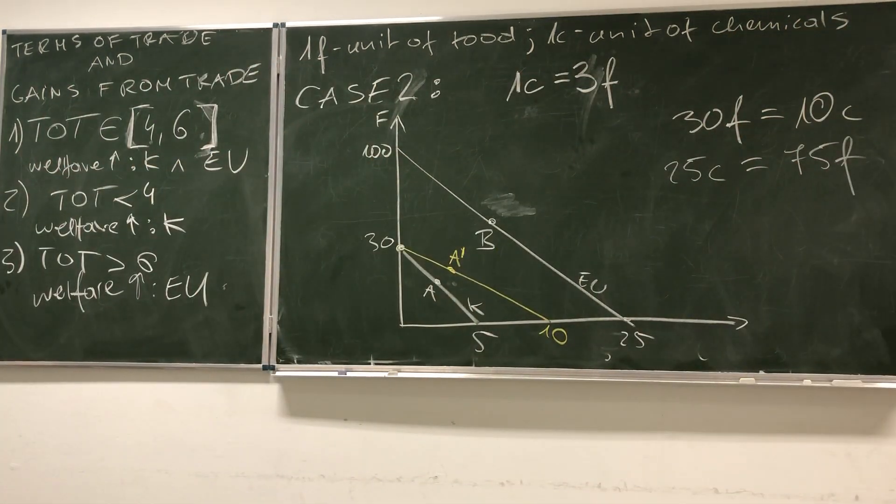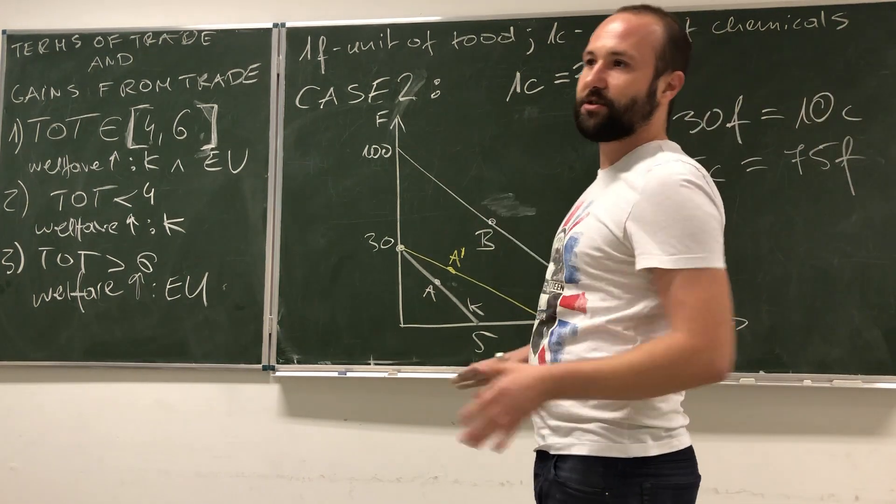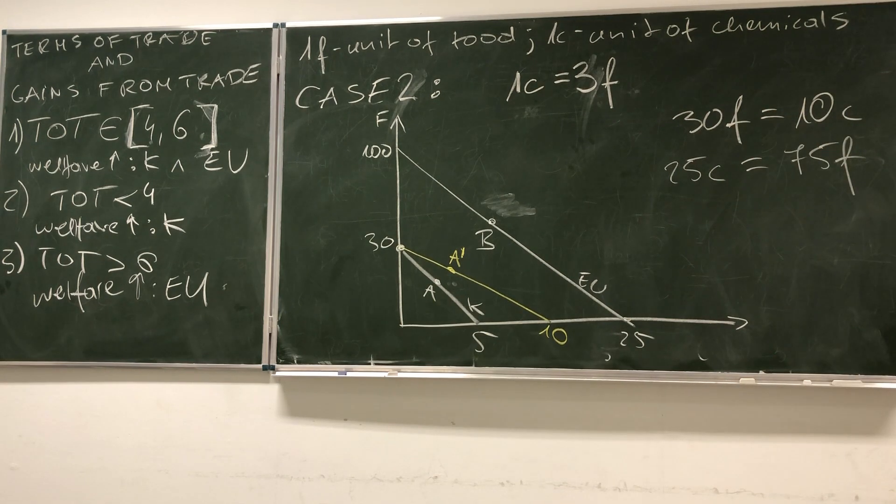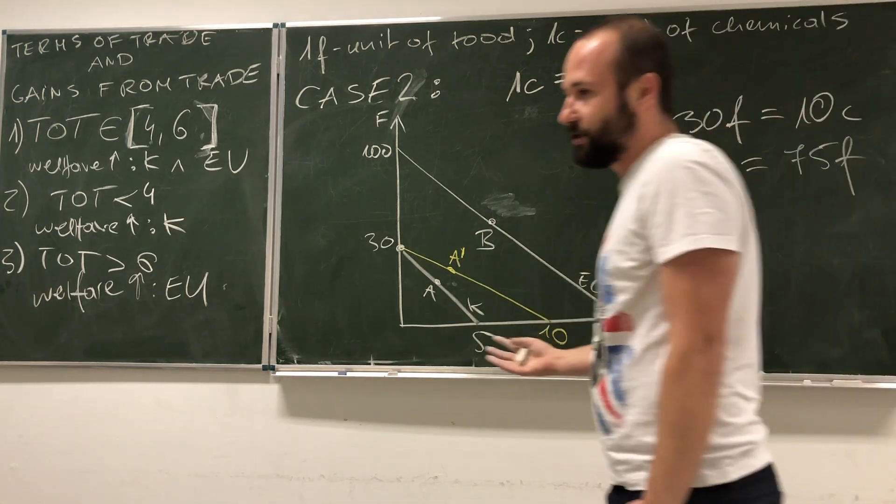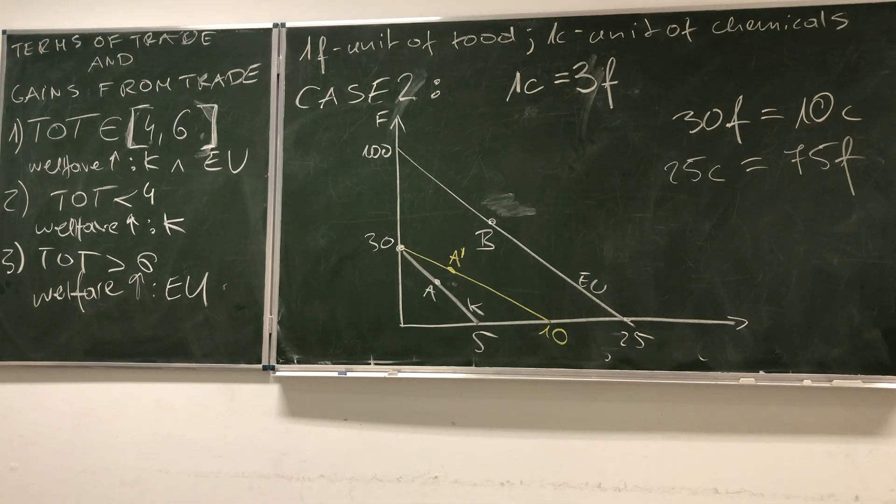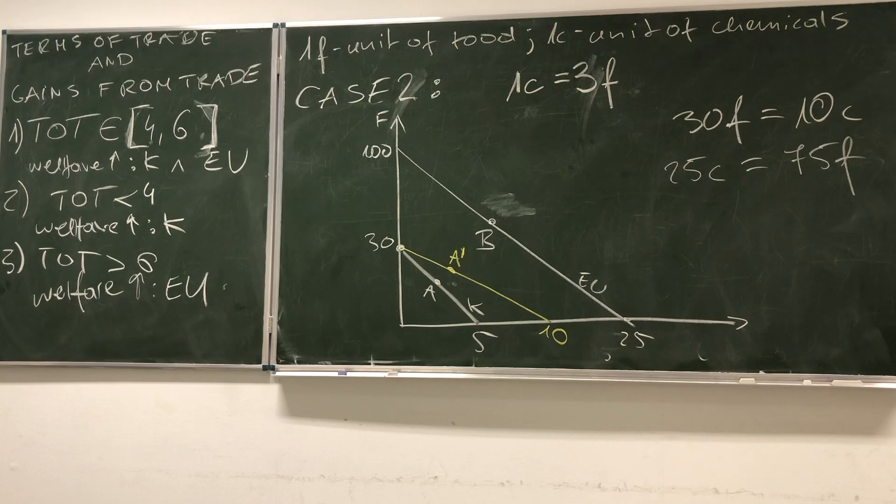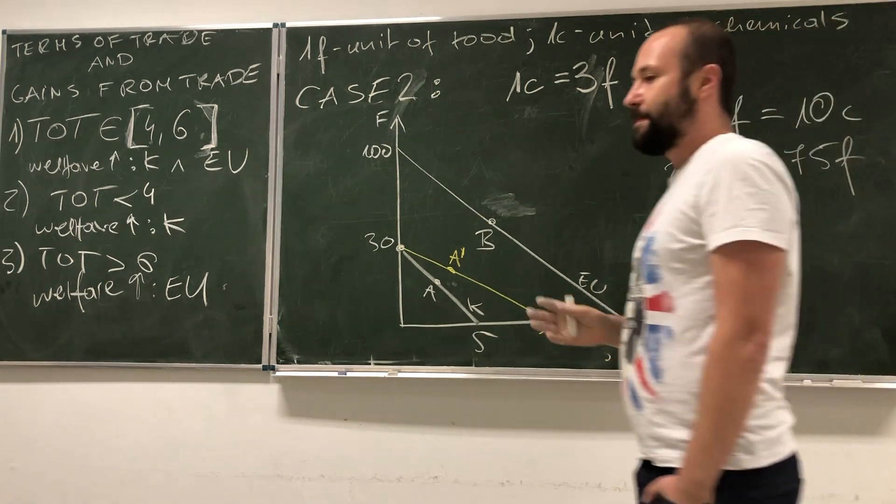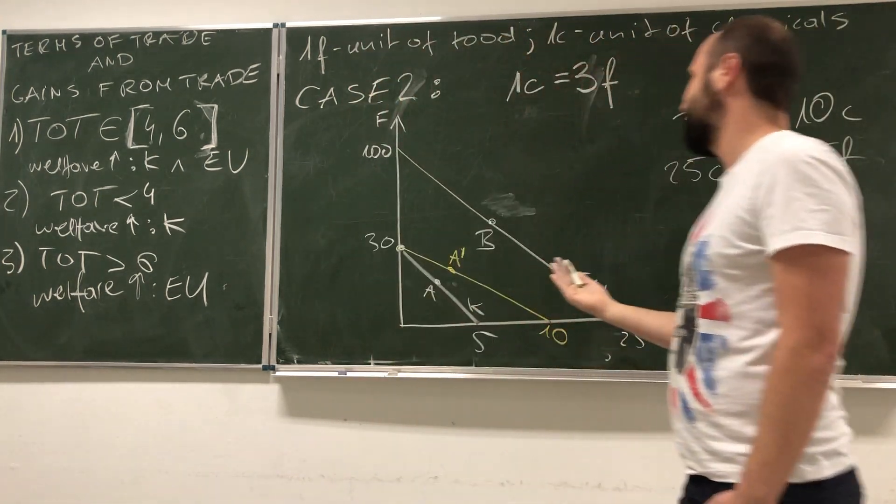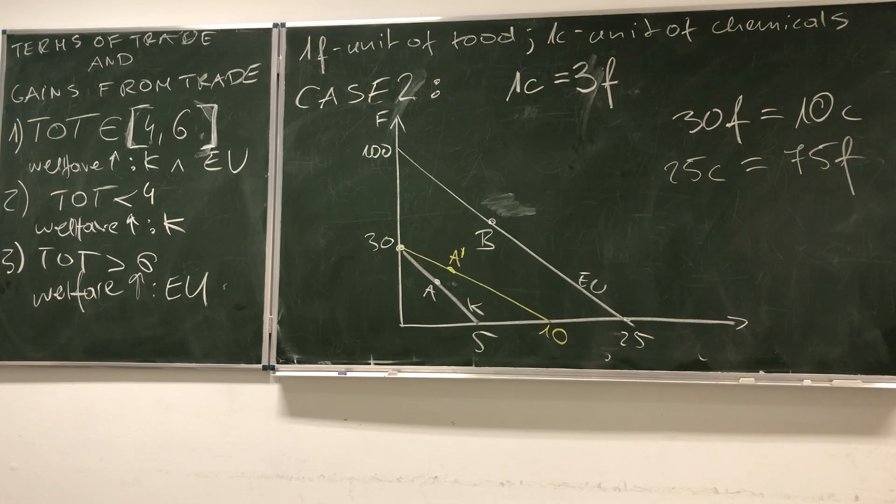For now, just remember the main thing: when the terms of trade are decided, it depends on international demand and international supply. Depending on the size of the country, big countries will have very strong influence on terms of trade on international market, while small countries will have only minor impact on them. The production decisions will change those terms of trade and, in turn, will be influencing welfare gains from trade.